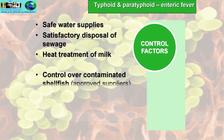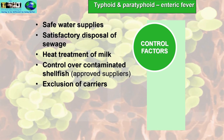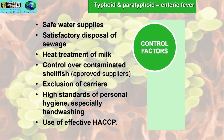Further control factors include heat treatment of milk, control over contaminated shellfish — using approved and reputable suppliers and knowing the provenance of your shellfish, ensuring they come from clean waters not contaminated with sewage. Other controls include exclusion of carriers in the workplace, high standards of personal hygiene with rigorous hand washing, and use of effective HACCP, which will be covered in more detail later.